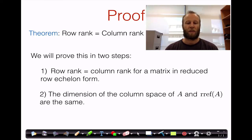In this step, we're going to show that the dimension of the column space of A and the dimension of the column space of the reduced row echelon form of A are the same.